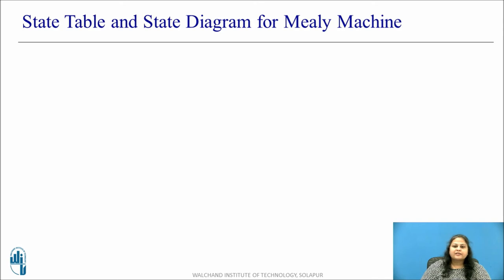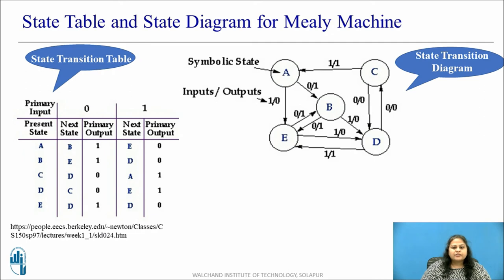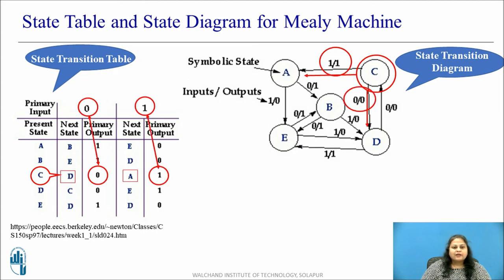Let us now discuss the state table and state diagram representation for the Mealy machine. The state table for the Mealy machine model shows that the present state section consists of all the states in which the circuit functions. Depending upon the input value and the present state, the next state and the output are calculated. Thus, both output and next state depend upon the present state and input. The state diagram for this table shows five circles representing the five states of the circuit. Depending on the present state and input, the state transition line points to the next state, and the input with its respective output is specified on the state transition line.